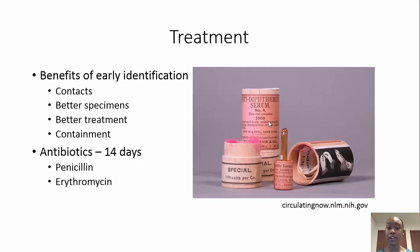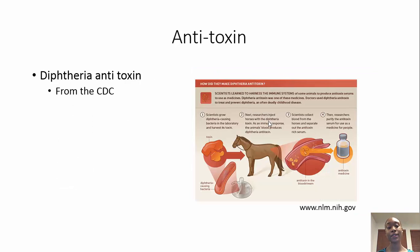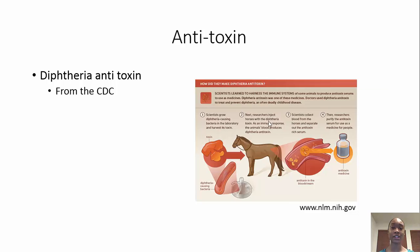Corynebacterium diphtheriae is a bacteria, so it can be treated by antibiotics. Penicillin and erythromycin are two antibiotics that can be used. It also must be treated by the antitoxin — whether it's a confirmed case or a probable case, the antitoxin must be given to the patient. It has to be received from the CDC, and it is also created in horses.